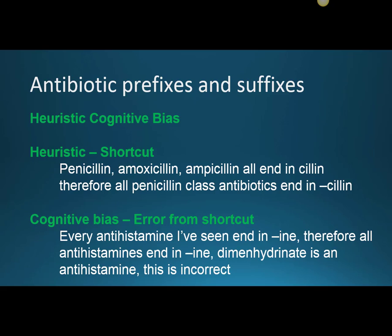Let me first define the term heuristic cognitive bias. A heuristic is a shortcut. Someone making these note cards says, well, I saw penicillin, amoxicillin, ampicillin — they all end in cillin — therefore all penicillin class antibiotics end in cillin. We don't really teach formal logic anymore. These errors have names in formal logic. They found this was true and then said, well, I can make shortcuts for other drug classes. The cognitive bias is the error from the shortcut.